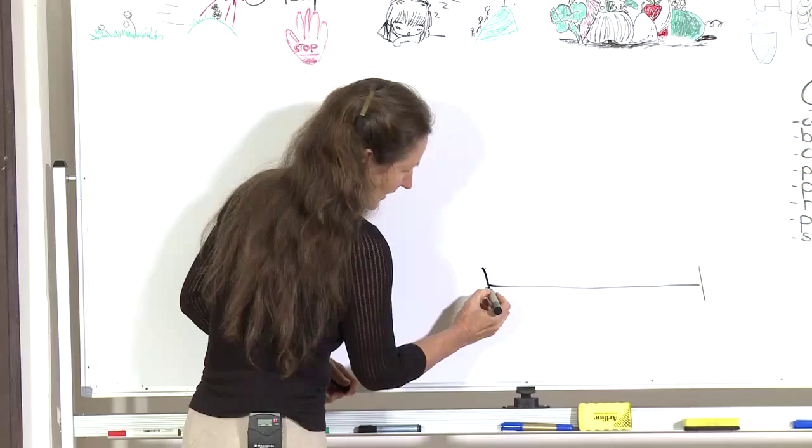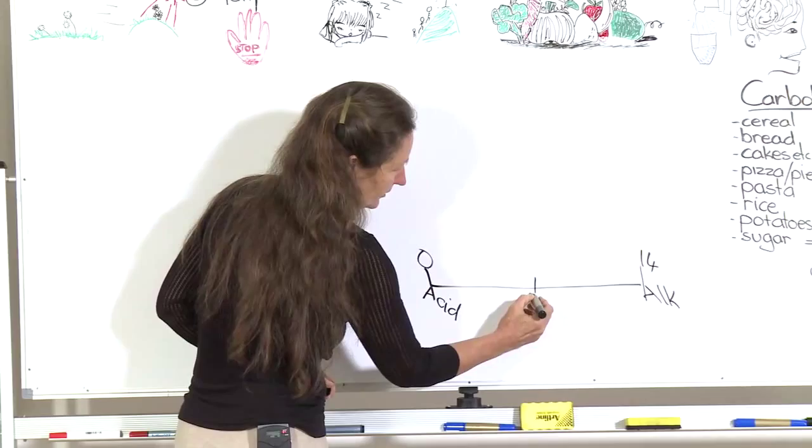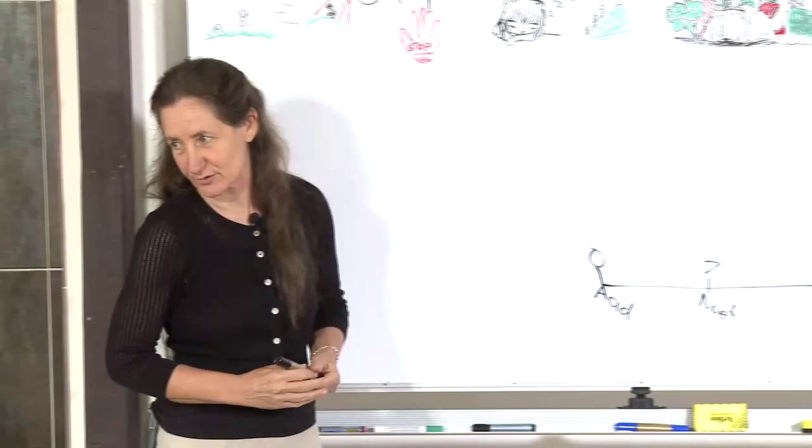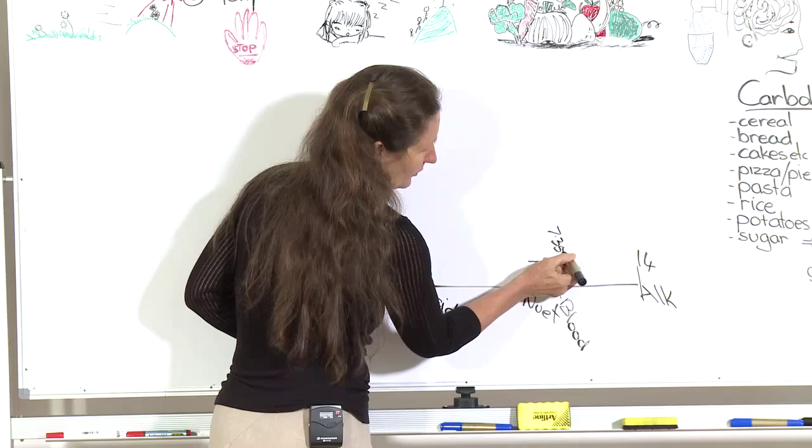On this acid-alkaline scale, up one end is acid with a reading of naught, and up the other end we have alkaline with a reading of 14. In the middle we have neutral, with a reading of 7. Most water should be neutral — neither acid nor alkaline. Blood has a reading on the pH scale of between 7.35 and 7.4.